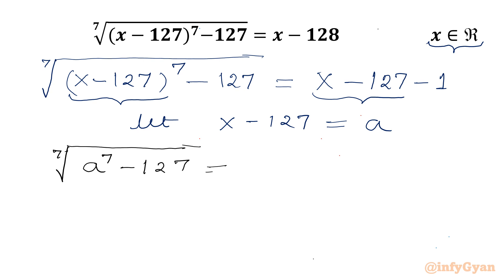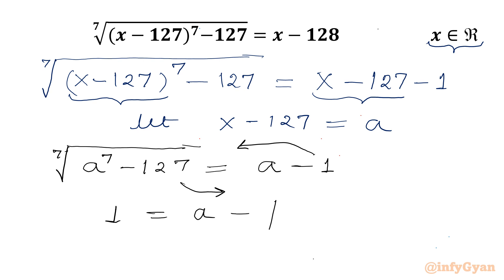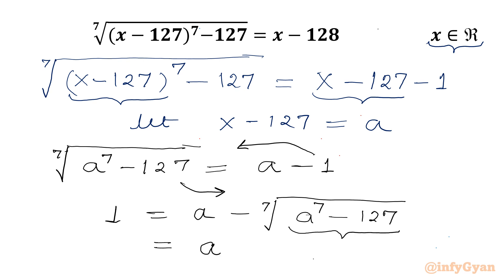So x minus 128 will be a minus 1. Now I will take minus 1 to the left and this radical term to the right. So it will become 1 equal to a minus the 7th root of a power 7 minus 127. Now I will take minus common from this radicand, so that minus comes out as the power is odd, giving us a plus the 7th root of 127 minus a power 7.